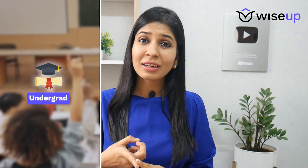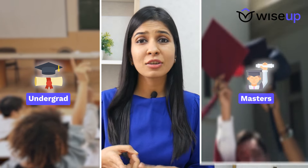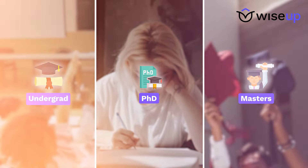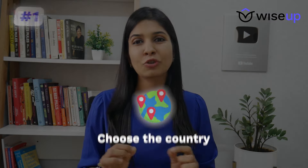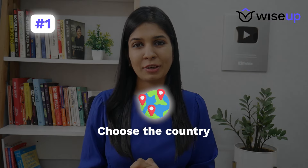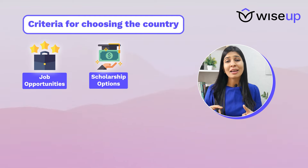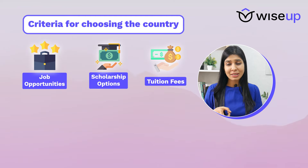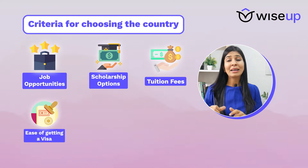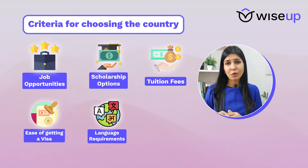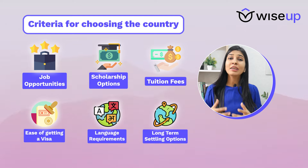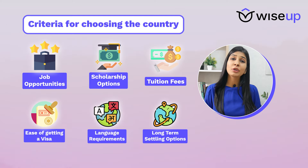The first thing you need to do, whether you're going for an undergrad, master's or PhD abroad, is to choose the country you wish to apply to. For this, I'd recommend looking at job opportunities, scholarship options, tuition fees, ease of getting a visa, language requirements, and long-term settling options if you plan to settle abroad as well.